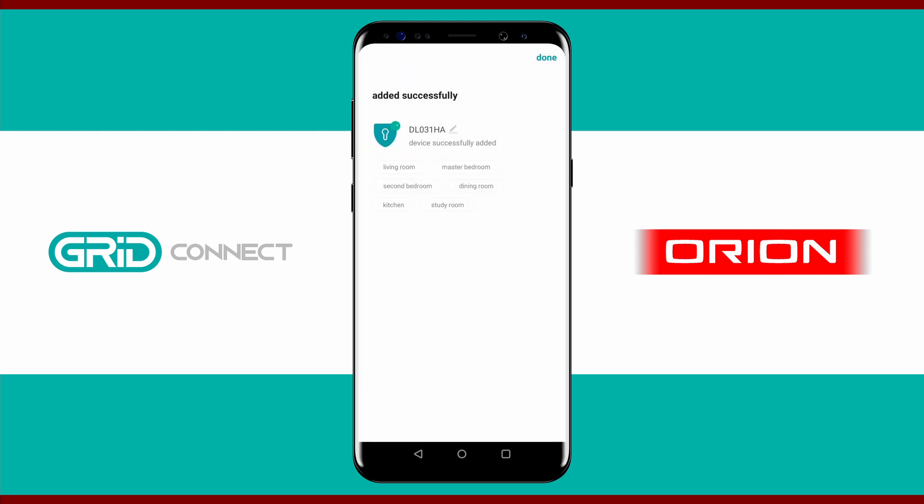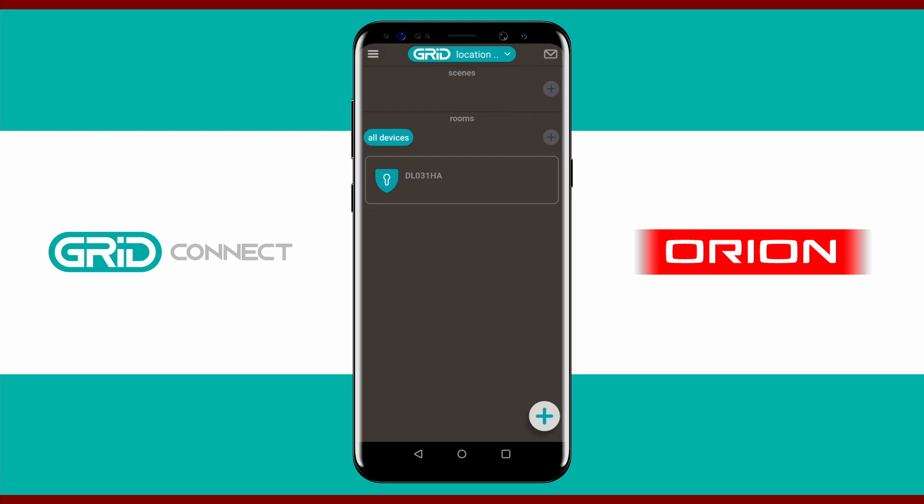Your smart lock is now connected. When linking a user to the Grid Connect app, start by selecting the lock in your device list.